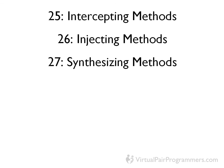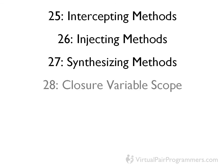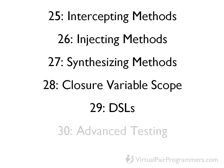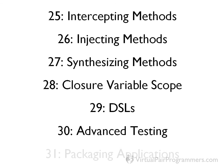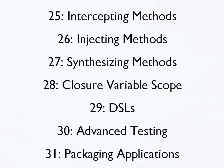Then in chapter 28, we're going to look at variable scope with closures. In chapter 29, we'll be creating a domain-specific language, or DSL. Chapter 30 revisits unit testing in a more advanced way with stubs, mocks and expandos. And then in chapter 31, we'll be packaging our application for deployment. And there's a summary at the end of the course.